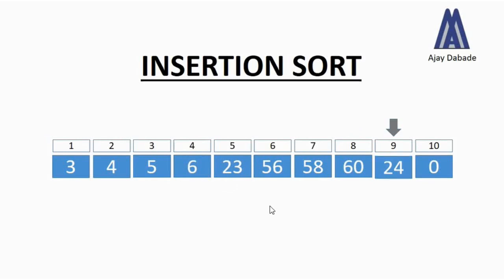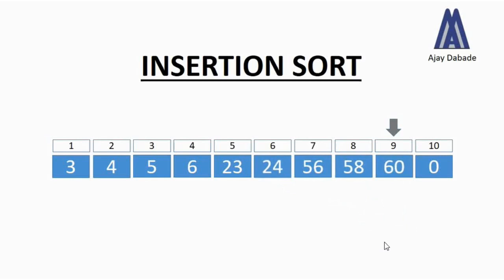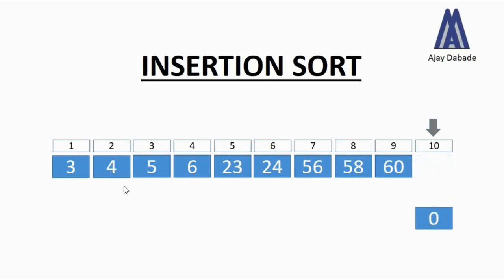We take the next number, which is 24, and compare it with the numbers at the left-hand side. We find that 56, 58, and 60 are greater than 24, so we shift those three numbers one place towards the right and place 24 at its right position. Finally we have the number 0 at position ten. Comparing it with all numbers on the left-hand side, 0 is lesser than all of them, so we shift all those numbers one position towards the right. There it is — the numbers are now sorted using insertion sort.